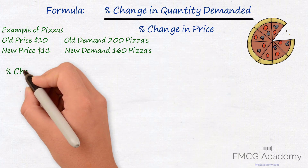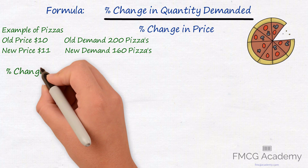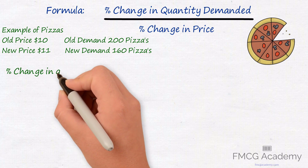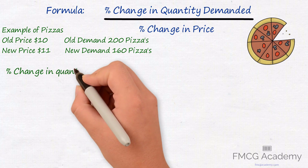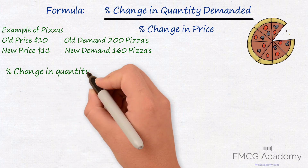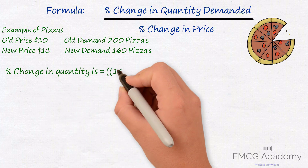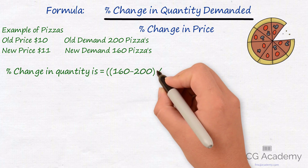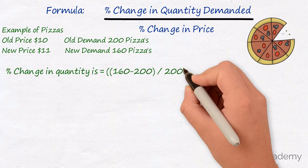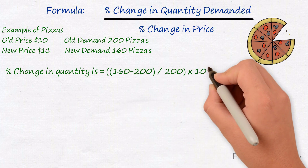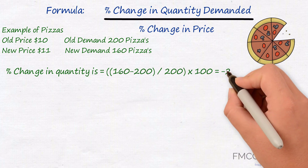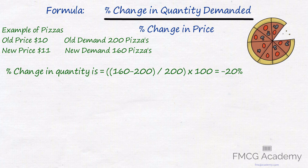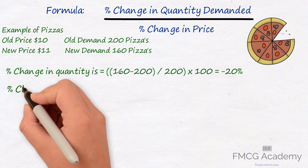To calculate percentage change in quantity, we take new demand of 160 minus old demand of 200, then divide by old demand. We multiply by 100 to get a percentage and we arrive at negative 20%. So demand has dropped by 20%.